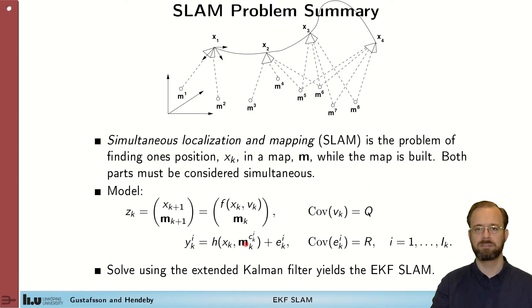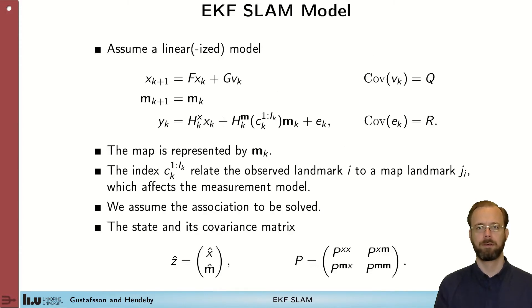The important part here is that we need to associate the appropriate landmark to the measurement that we have and that is done with this indicator here CKI which is the which landmark is associated with the ith measurement at time k. And what we'll do today is to solve this using extended Kalman filter which yields the EKF SLAM.